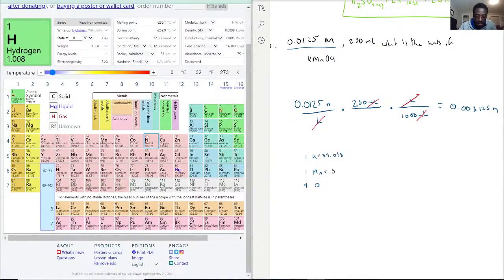And oxygen is 15.999. So when we add these together we have 39.098 plus 54.938 plus 15.999 times 4 which is 63.996. And then we add them together and we get our molar mass to be 158.032 grams per mole.